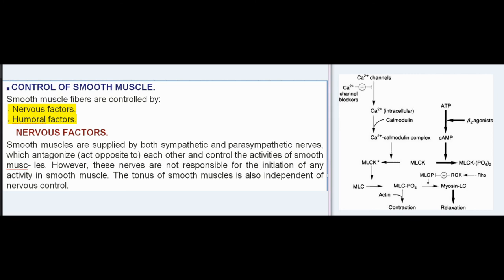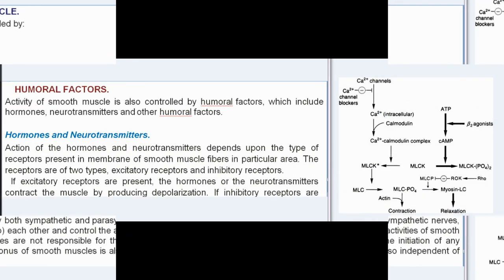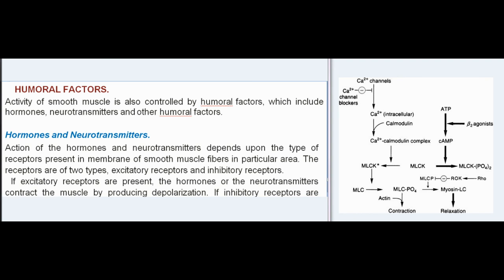The tonus of smooth muscles is also independent of nervous control. Humeral factors: activity of smooth muscle is also controlled by humeral factors, which include hormones, neurotransmitters, and other humeral factors. Action of the hormones and neurotransmitters depends upon the type of receptors present in the membrane of smooth muscle fibers in a particular area. The receptors are of two types: excitatory receptors and inhibitory receptors. If excitatory receptors are present, the hormones or neurotransmitters contract the muscle by producing depolarization. If inhibitory receptors are present, they relax the muscles by producing hyperpolarization.